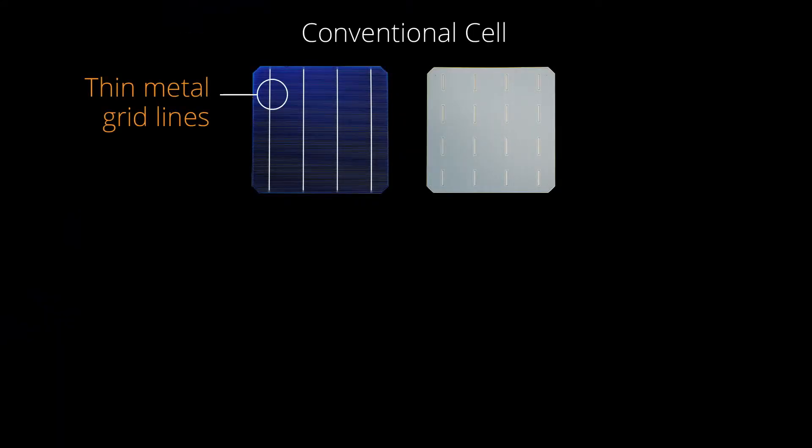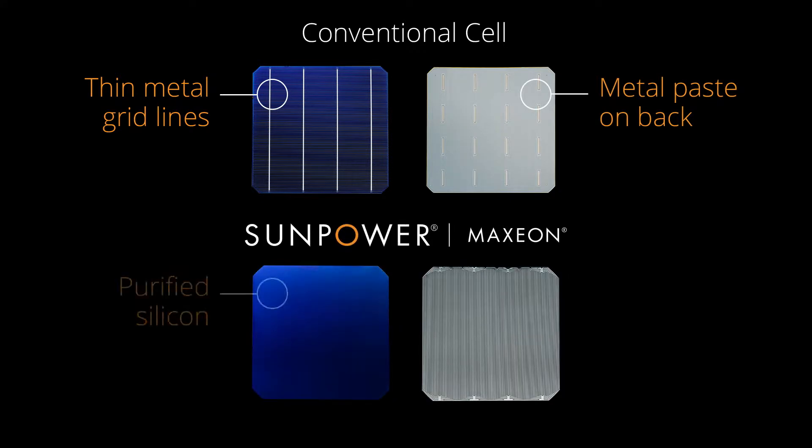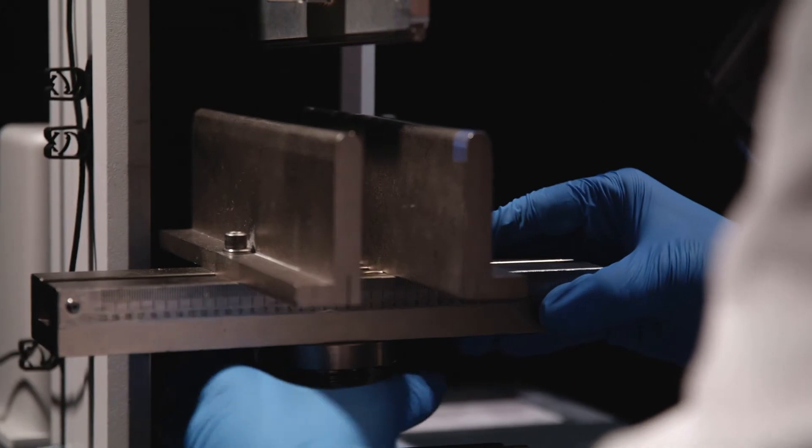Conventional cells rest on a thin layer of metallic paste. Only Maxion cells are built on a solid copper foundation, making them virtually impervious to breakage, as scientific testing in laboratories makes clear.